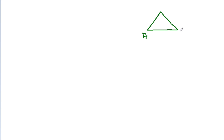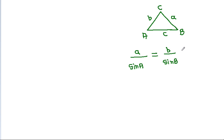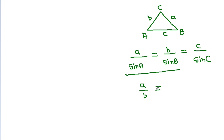In any triangle ABC with sides a, b, c, by the sine rule: a divided by sin A equals b divided by sin B. From this, a divided by b equals sin A divided by sin B, meaning the ratio of sides equals the ratio of the opposite angles' sines.